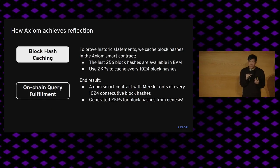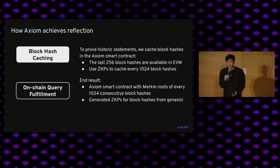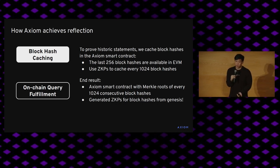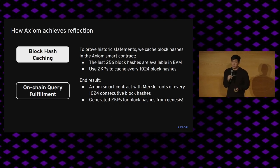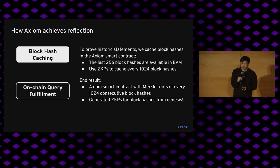There are essentially two tasks to achieve this. The first is to actually be able to access historic block hashes at some scale. Doing this from scratch for each query would be pretty expensive, even in ZK. So we maintain a smart contract that caches a merkelized form of all historic block hashes on Ethereum. The EVM allows you to access the last 256 block hashes, and we systematically reverse that Keccak header chain to cache every 1024 block hashes. The end result is that our smart contract, which you can view on mainnet today, contains a verified Merkle root of all past block hashes from Genesis.